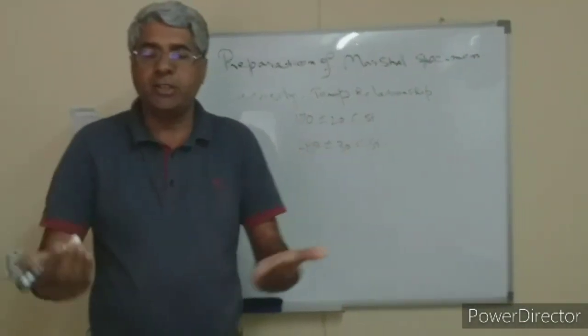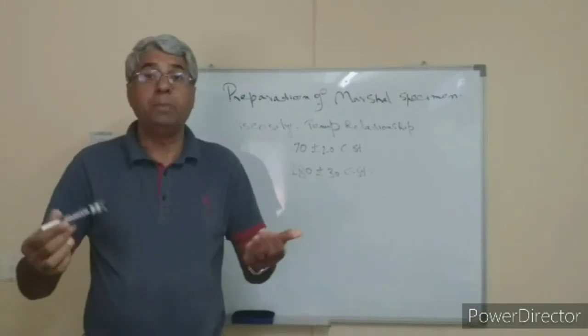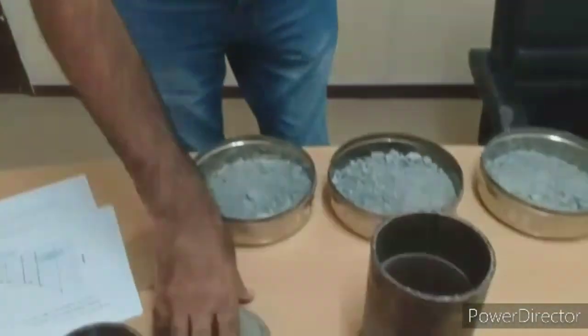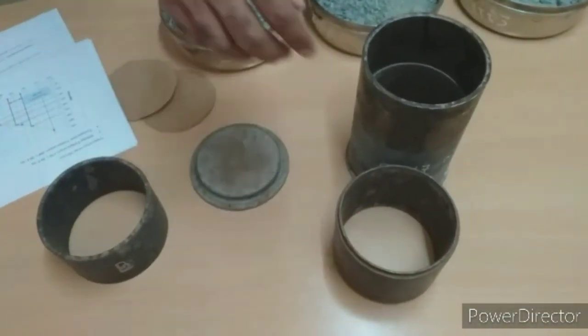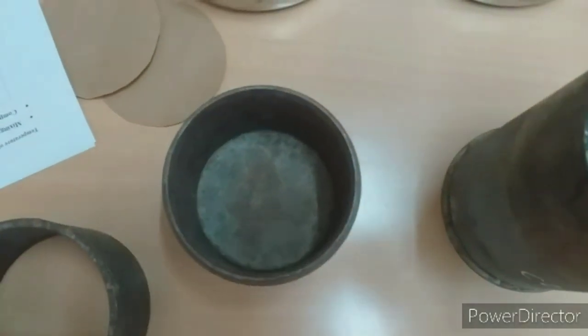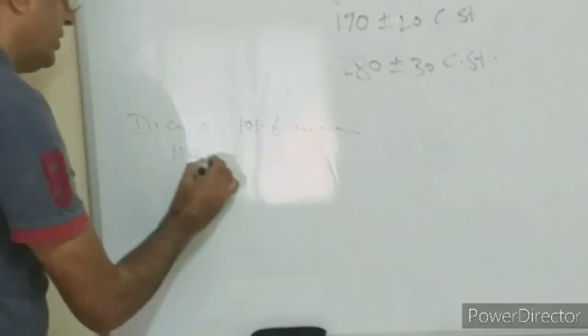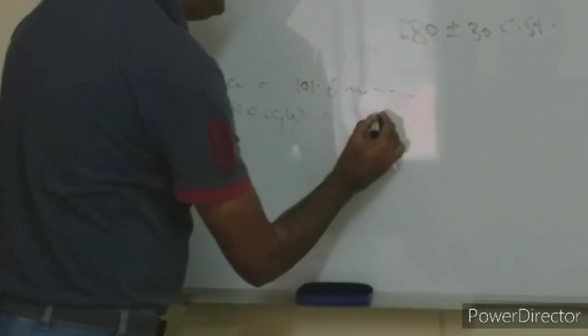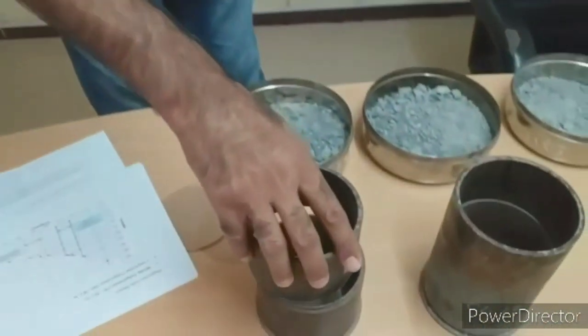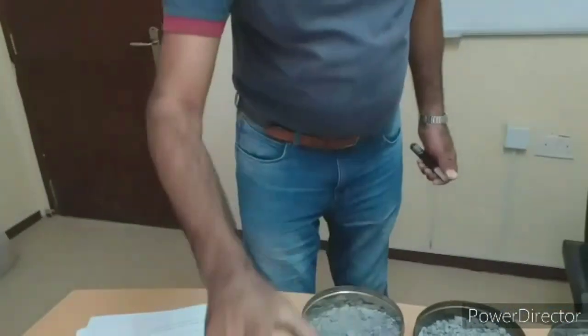Now everything is clear. This is the Marshall specimen; the procedure of mix design development is by the Marshall method. The apparatus includes: a base plate, a Marshall mold placed on the base plate, and a collar on top. The mold has an internal diameter of 101.6 millimeters and a height of 75 millimeters.